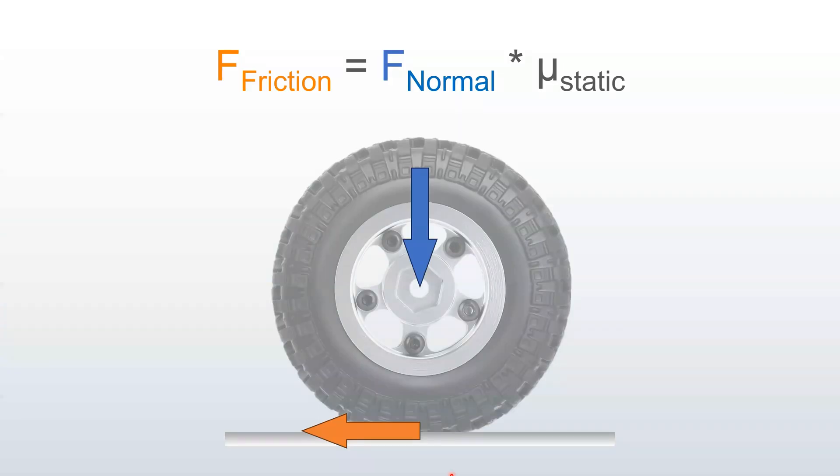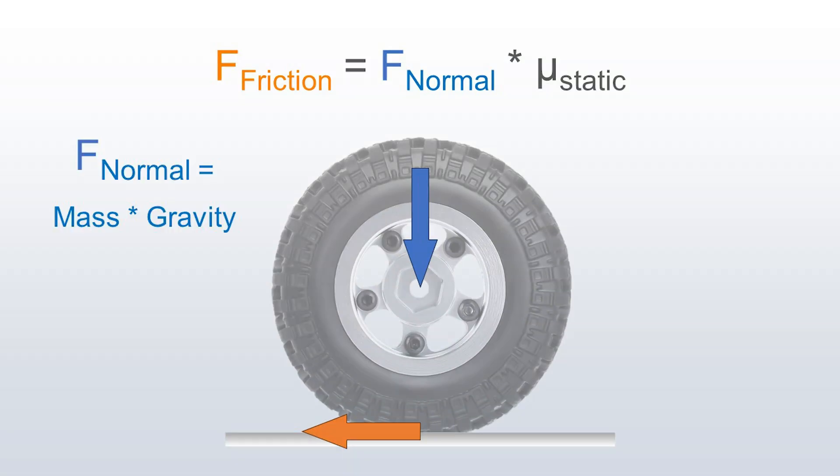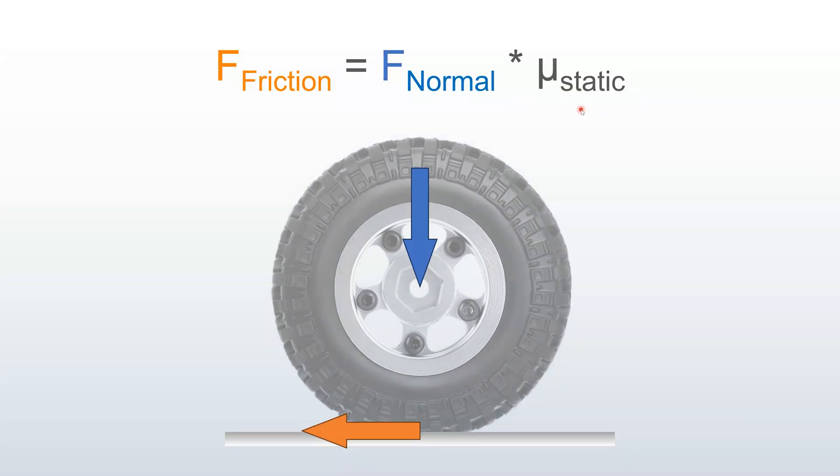So, this is the equation for static friction. It's the normal force, which is this blue force pointing straight down. It can also be known as downforce. In this case, this downforce is coming from mass times gravity. It's merely the weight of your truck pushing down against the ground. And you multiply that by this constant, which is the coefficient of friction constant. And if your wheels aren't slipping, it's the static coefficient of friction. And that equals your total frictional force.